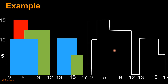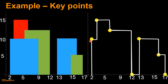Now let's define key points for this skyline. These key points mark the start of the horizontal line segments in this skyline. For every horizontal line segment, we have one key point defined. This key point marks the start of the first horizontal line segment, this marks the start of the second line segment and so on. Finally, the key point at 17 marks the end of the skyline. These key points are actually sufficient to describe a given skyline.